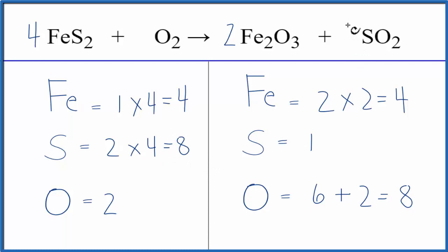Let's fix the sulfurs. Put an eight in front of the SO2, one times eight, that'll give us eight sulfurs. Those are balanced,